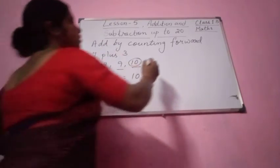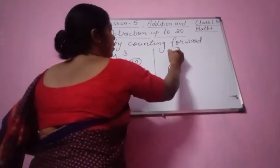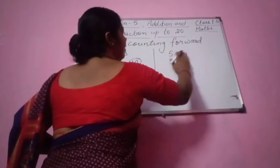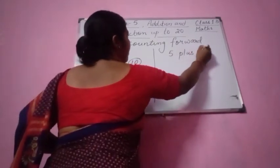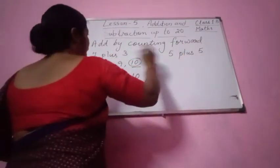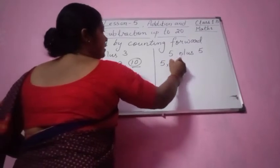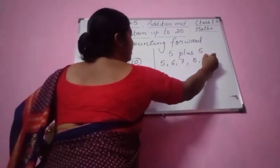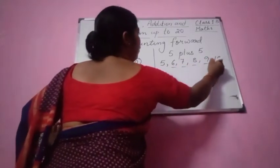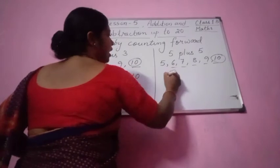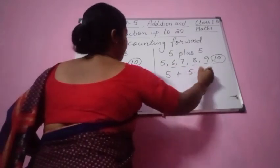This is add by counting forward. Let us do one more sum: 5 plus 5. So after 5, more 5 places we have to write down — 6, 7, 8, 9, 10. See, 5 places: 1, 2, 3, 4, 5. So the answer is 10. 5 plus 5 — how much will it be? It will be 10.